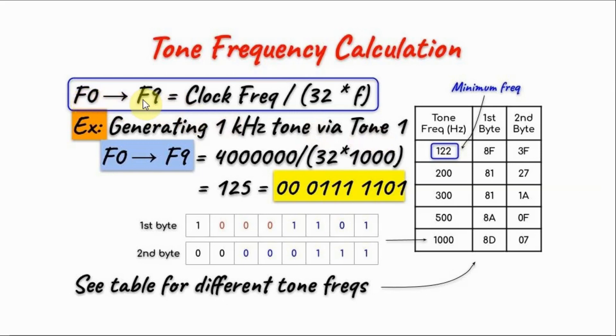To find the 10-bit frequency value, we use this formula, which is the clock frequency divided by 32 divided by the required frequency. The reason we divide by 32 is that 32 clock cycles are required to load the data into the control register.